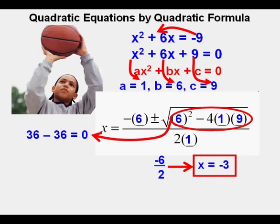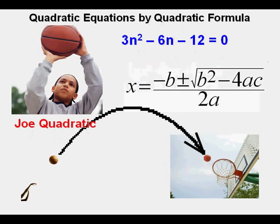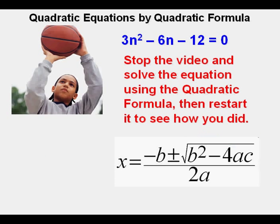Let's look at this quadratic equation, 3n squared minus 6n minus 12 equals 0. Stop the video and solve this equation using the quadratic formula. Restart the video after you have found your answer to see if it matches Joe's.